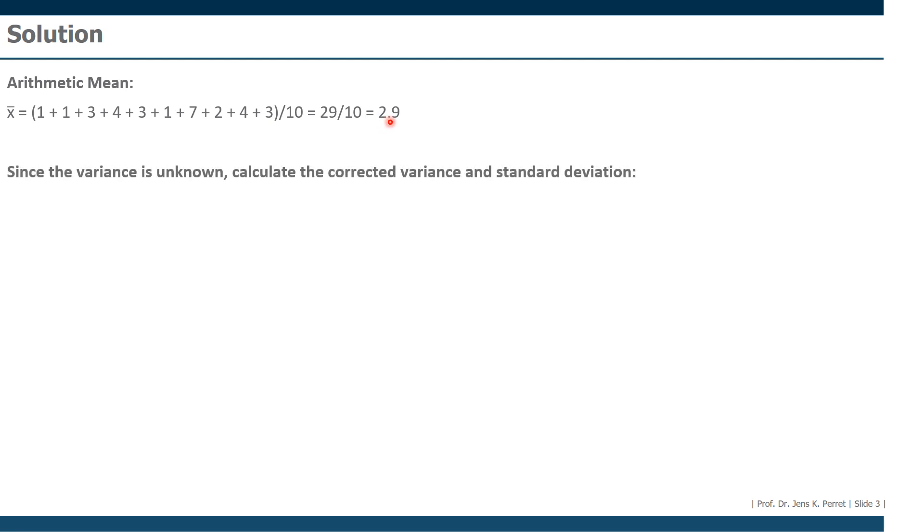Then the second step is the variance, or rather the standard deviation, because nothing in this direction was given in the exercise text. We start with the corrected version of the variance, corrected since we're working with sample data. For this we're going to subtract from each observation the arithmetic mean, so it's always minus 2.9.